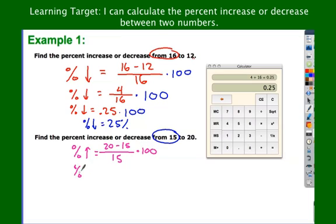Times 100. Next line, do the subtraction. Then plug in 5 divided by 15. I get 0.3 repeated, so let's just do 0.33. And that gives me a percent increase of 33%.